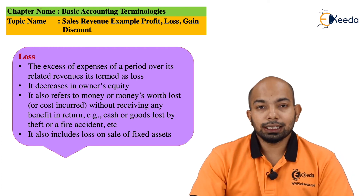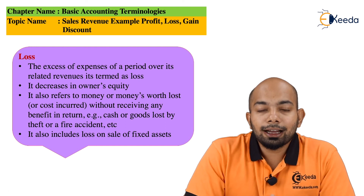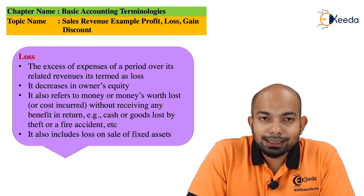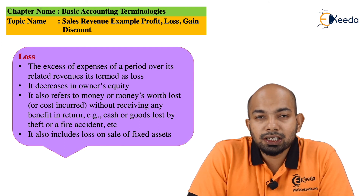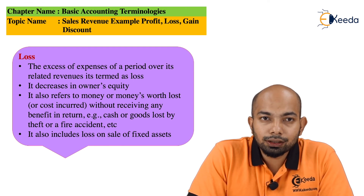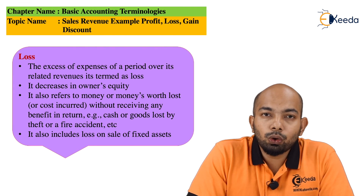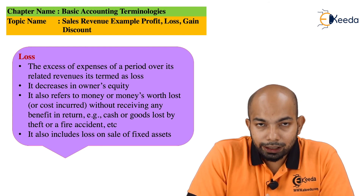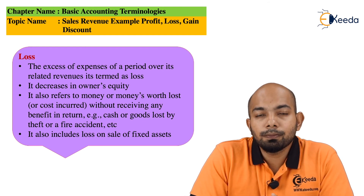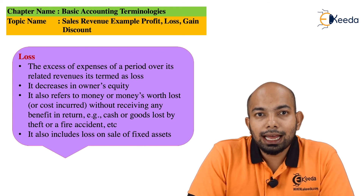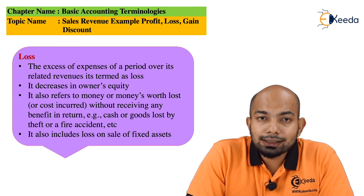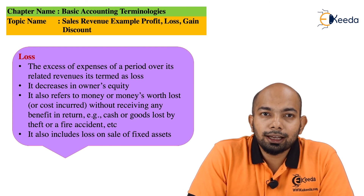When we talk about a loss-making company, these specifications relate to companies that have more liabilities and less profit and less assets. Any company that has more liabilities, has to pay more expenses, and has less income due to non-generation of profit — those companies are known as loss-making companies.